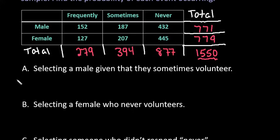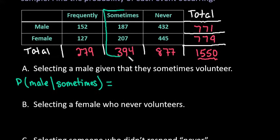First, we're trying to find the probability of selecting a male given that they responded sometimes. This is an example of a given probability. So we are given that they sometimes volunteer, so we're talking specifically about this column right here. Anytime you are given something, we are looking at specifically that column or that row. We have a total of 394 people that responded sometimes, and of those, 187 of them are males.